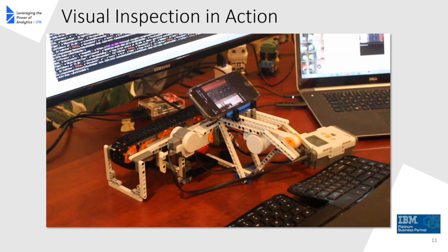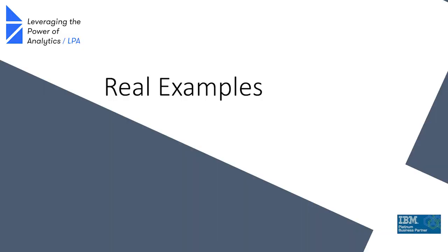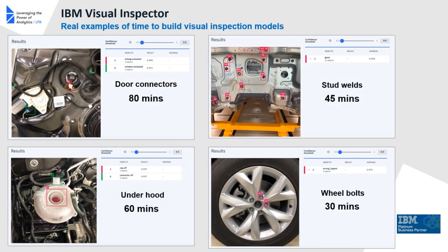You can set thresholds for the confidence level of the model in identifying a defect — you can decide whether to act on it if the model is only 52% confident versus 75% confident. In this case, the model is almost always 99% confident that it has properly identified what's going on. Building the assembly line took me a little more than a day and a half, while actually building the visual inspection model took about 30 minutes, all told.